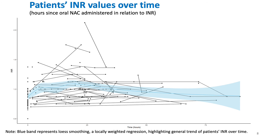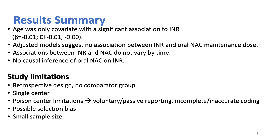This is a visual representation of hours since oral NAC administered in relation to INR. Points represent separate INR values for the same patient, connected linearly to show progression. The blue band represents loess smoothing, a typically weighted regression highlighting the general trend of patients' INR over time. Statistical analysis showed that age was the only covariant with significant association to INR, with beta at 0.01 and confidence interval negative 0.01 to 0.00. Adjusted models suggest no association between INR and oral NAC maintenance dose, and associations between INR and oral NAC do not vary by time. There is no causal inference of oral NAC on INR in our sample.